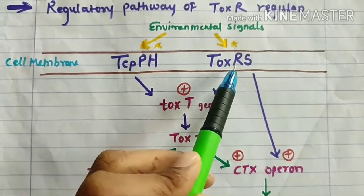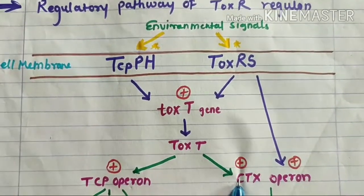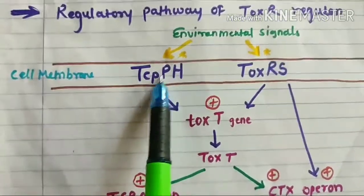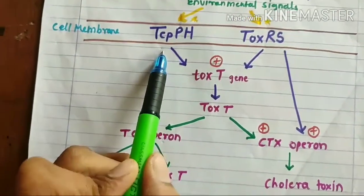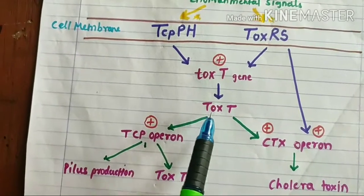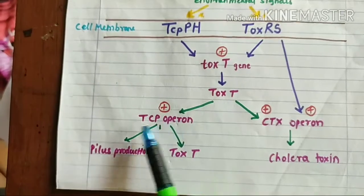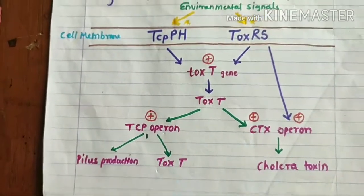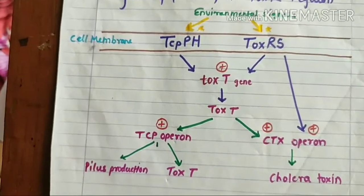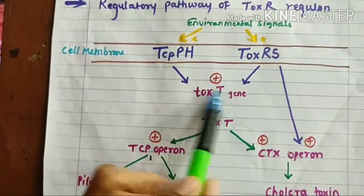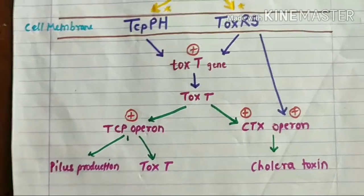ToxR protein upon activation also directly and positively activates the CTX operon. Similarly, ToxT protein also positively regulates the CTX operon. For the TCP-H and TCP-P pathway: the signal comes to TCP-H, it activates TCP-P, and this activated TCP-P positively regulates the tox-T gene. ToxT protein can then regulate all genes in the ToxR regulon, including the TCP operon and CTX operon. The presence of both TCP-P and ToxR in the activated state gives optimal activation of tox-T genes, resulting in production of cholera toxin and all other virulence components which help in the pathogenicity of cholera.